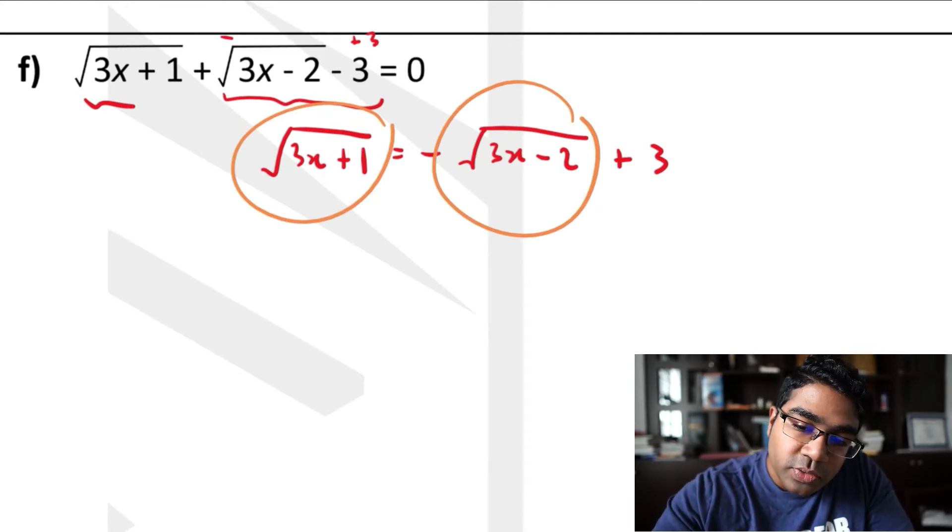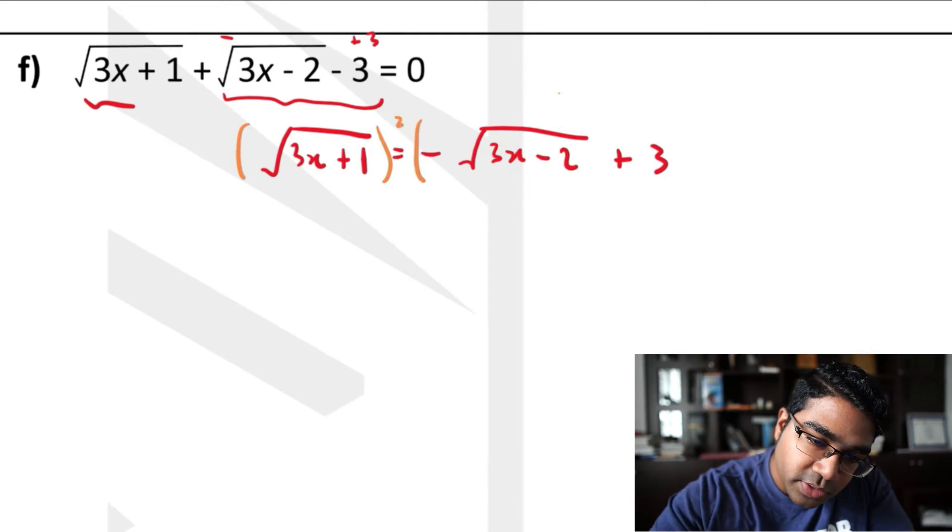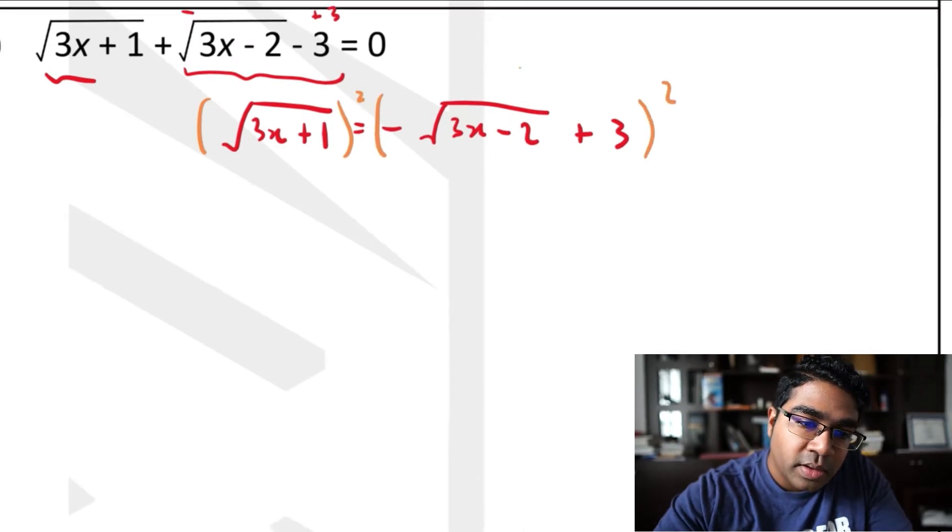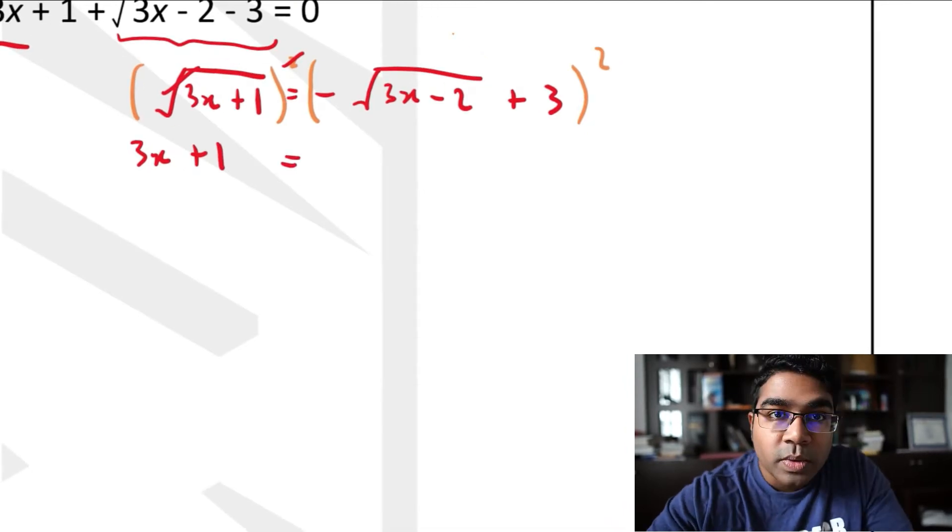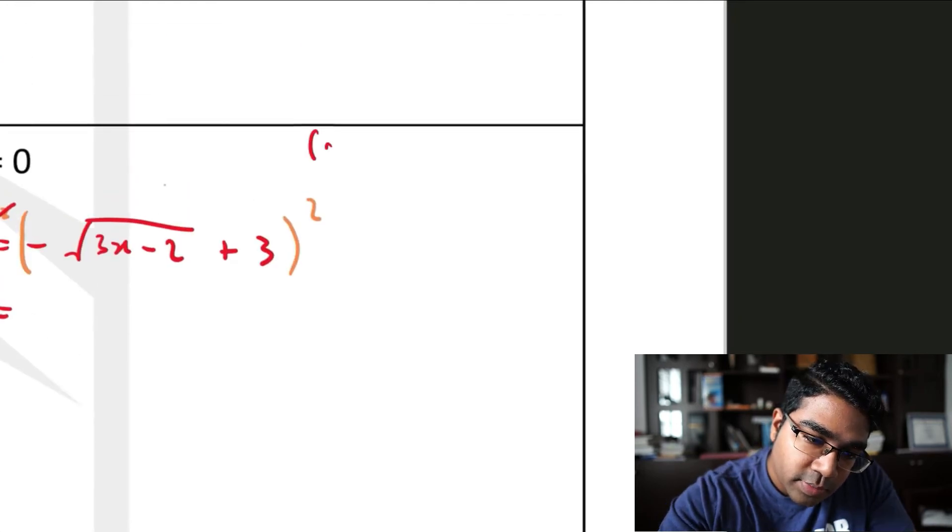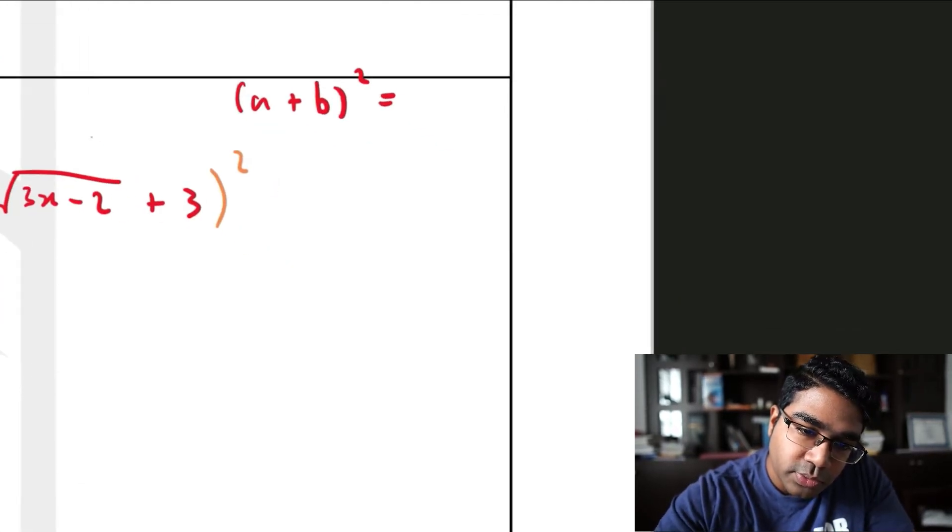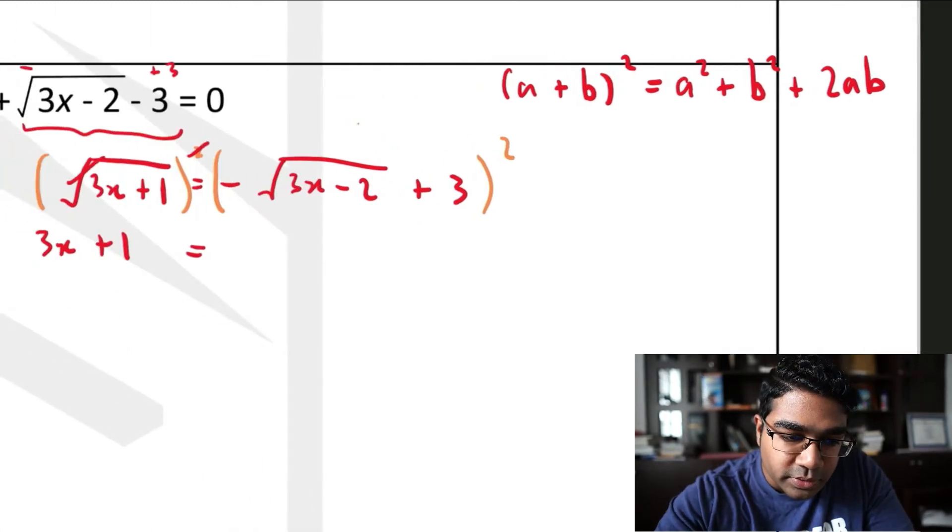And now we are ready to square it. So when we square this, we square both sides of the equation. You cannot just square one side. We will get here, square root and square is eliminated, so you get 3x+1 equals to, on this side we're going to use the shortcut here. The shortcut is (a+b)² = a² + b² + 2ab. So that's exactly what we're going to do.